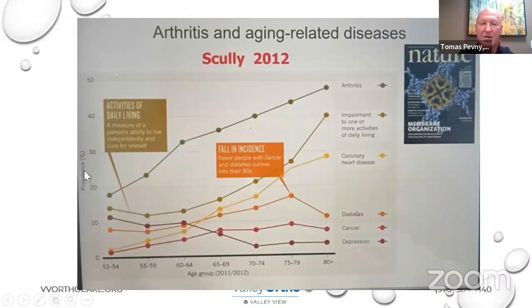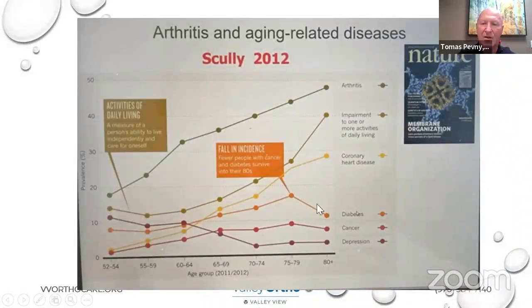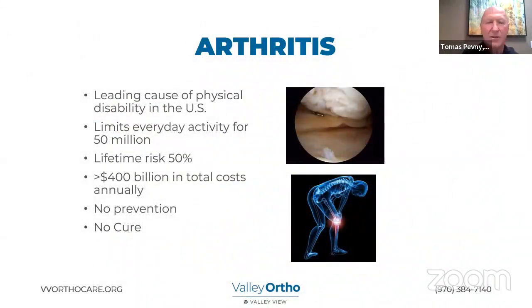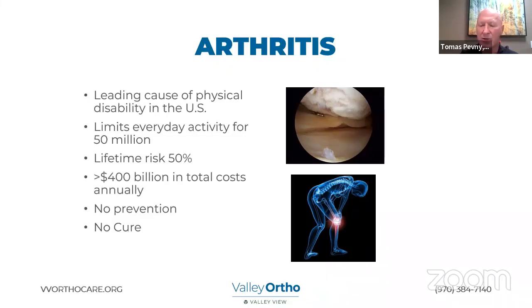Looking at prevalence data from 2012, arthritis overall is more prevalent than coronary heart disease, diabetes, cancer, and depression, and it affects quality of life more than these other diseases. Arthritis is the leading cause of physical disability in the U.S. — over 50 million people have it. If you live to be 75 or older, you have about a 50% chance of developing arthritis in your knee or hip. It's expensive to treat — about $500 billion a year in total direct and indirect costs, including loss of work and productivity. The problem with arthritis is that there is no way to prevent it and we really don't have a cure; the only cure is a replacement.